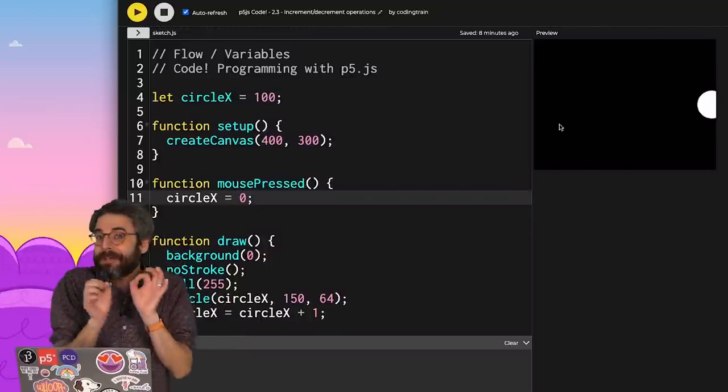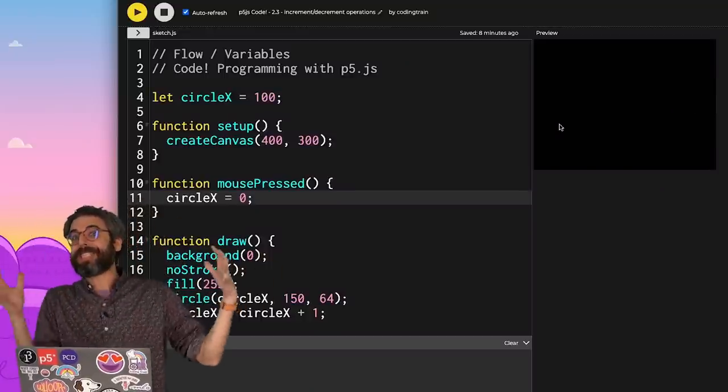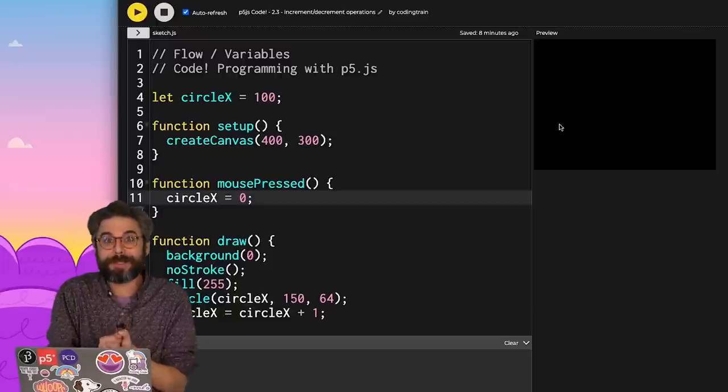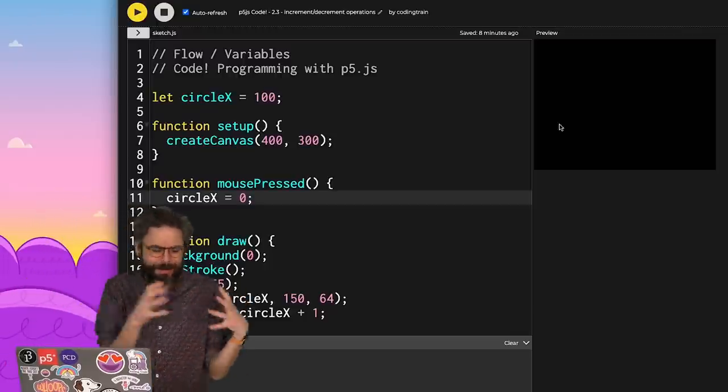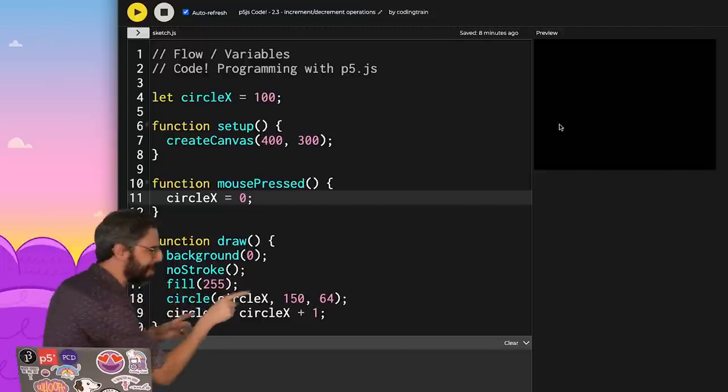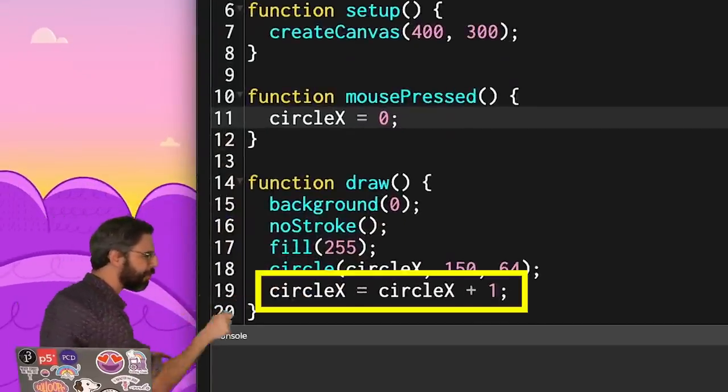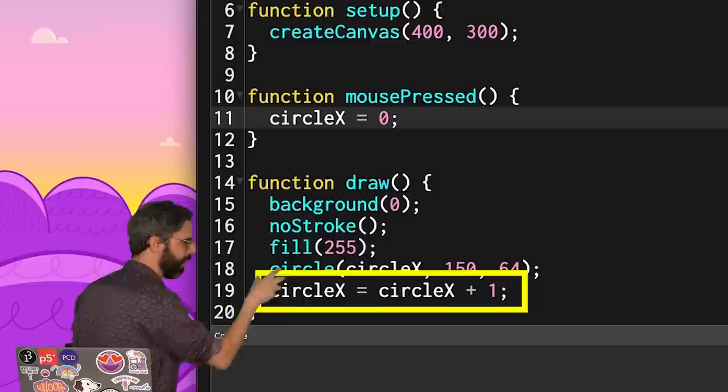Hello again. I am inserting a little extra video here in this section on working with variables in p5.js to talk about something called an incrementation operation. I really just want to put laser focus on this one line of code here: circleX equals circleX plus 1, right?